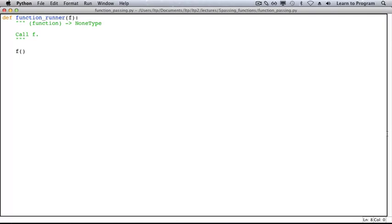Here is a function called functionrunner. It has one parameter, f. f's type is function. Functionrunner calls f, and as you can see in the body, that's exactly what it does.